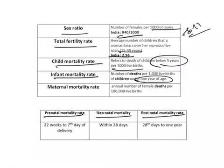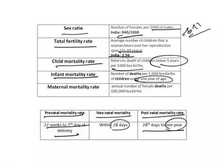Prenatal mortality rate includes deaths from 22 weeks of pregnancy till the 7th day of delivery. Neonatal mortality includes deaths in the first 28 days of life. Post-neonatal mortality includes deaths after 28 days but before 1 year. Maternal mortality rate refers to the number of women who die as a result of pregnancy and childbirth complications per 1 lakh live births in a given year.